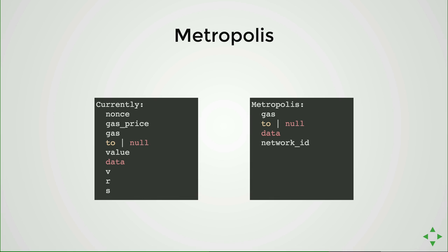Metropolis will introduce a new kind of transaction floating in the network. These transactions will have just four fields: gas, optional recipient, data, and network ID. Nothing else — no signature, no gas price, no nonce.